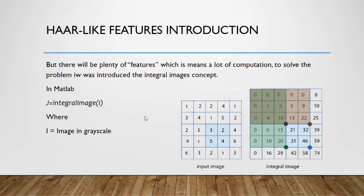But there will be plenty of features, which means a lot of computation. To solve the problem, it was introduced the integral image concept. In MATLAB, we can obtain this image using this code. J equals integral image of I, where I is an image in grayscale. So we have an example of how it works, the integral image. It's only the sum of these values. For example, one plus two is equal to three. Then two plus two plus one is five. It works the same thing here on the rows. So three plus one is four. Two plus three plus one is six. So this code makes this integral image.